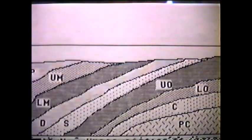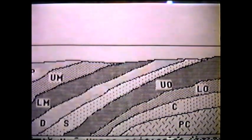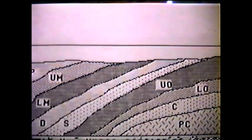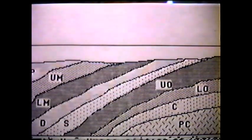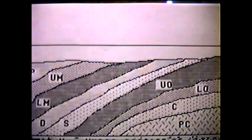Although the bedrock of southern Indiana appears to be horizontal, actually it is tilted slightly. Indiana lies on the western part of a large upfold in the rock, a dome called the Cincinnati Arch. The landscape of southern Indiana is the direct result of this bedrock feature.